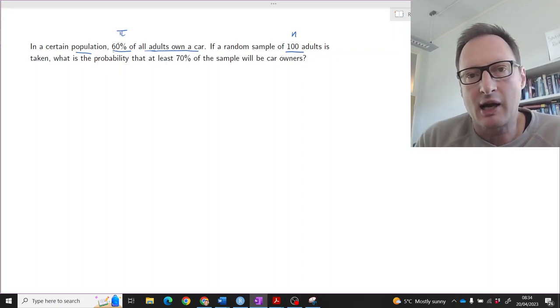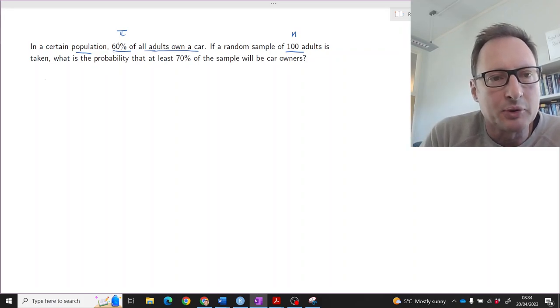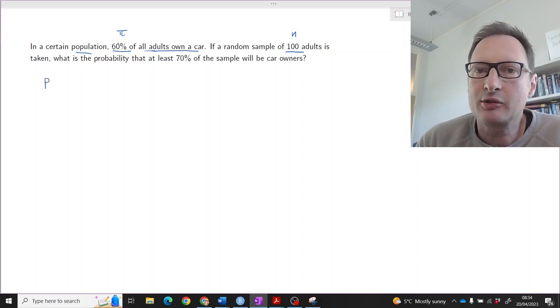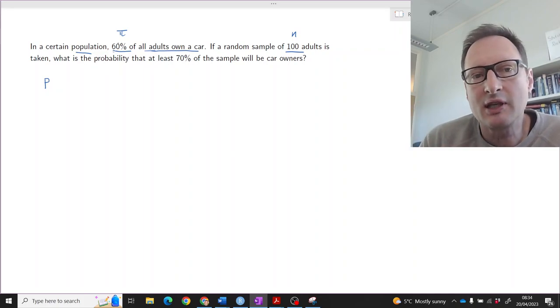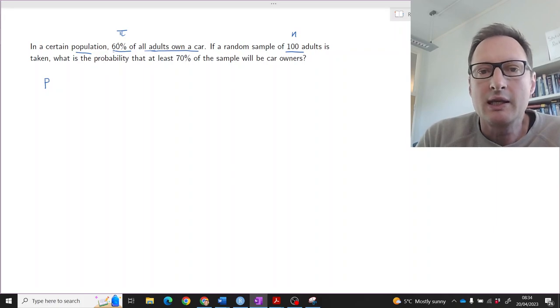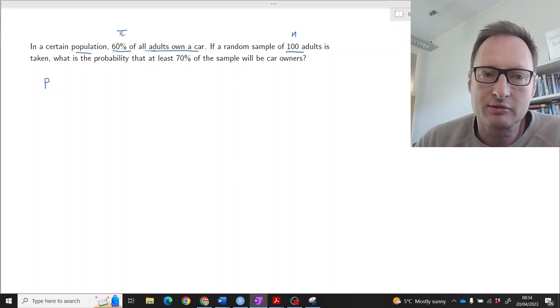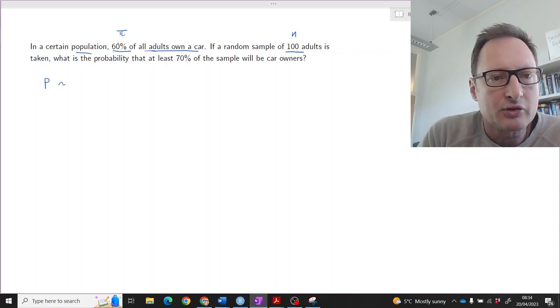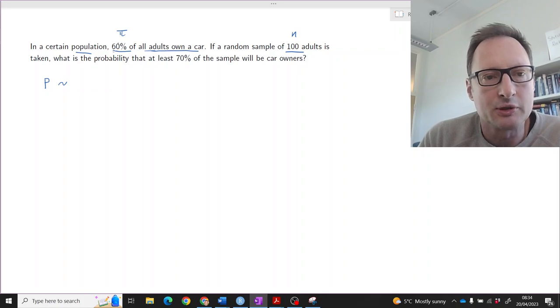So we are taking a sample and calculating the sample proportion. We call that p-hat, the sample proportion, and that is a random variable. Because even if in the population we know that 60% car ownership, each sample will give us a different value. And we describe random variables through their distributional properties.